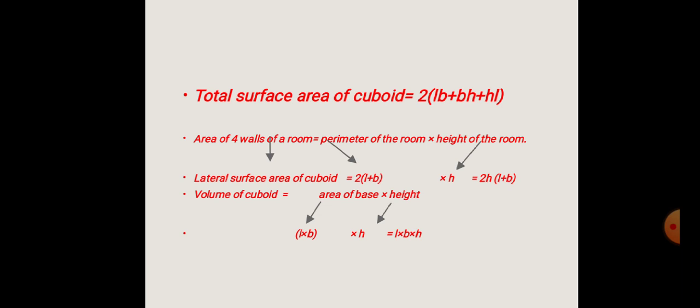The volume of a cuboid tells us how much space or capacity it has. To find it, we calculate the area of the base — which is a rectangle — and multiply by height. The area of the rectangular base is length × breadth, so the volume of a cuboid equals L × B × H.